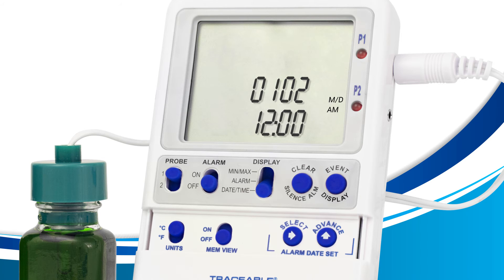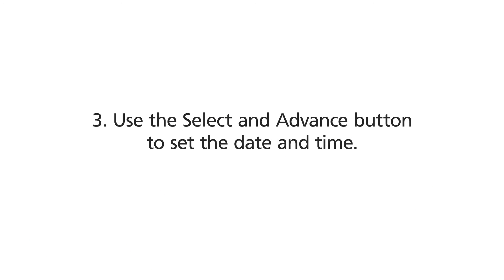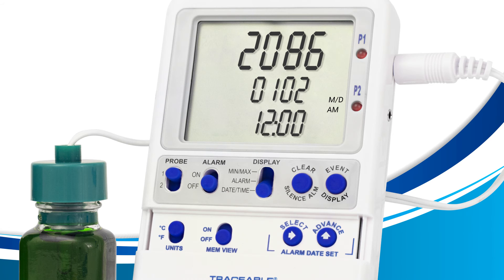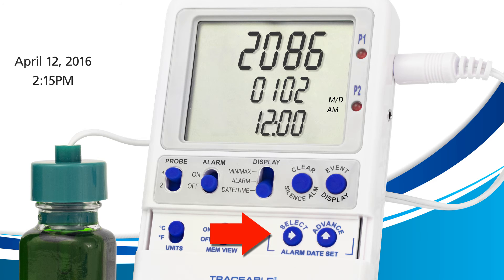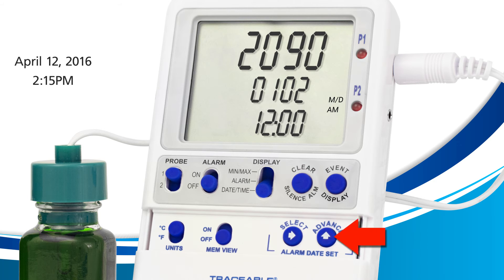Now let's use the select and advance buttons together to set the date and time. I'm going to enter today's date: April 12, 2016, and the time 2:15 PM — be sure to insert your own date as we go. First, press the select button to select the year. Then press the advance button several times until you reach your target year. To move faster, hold the advance button down to quickly increase the year.